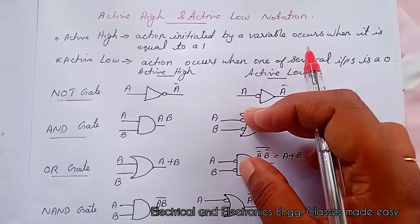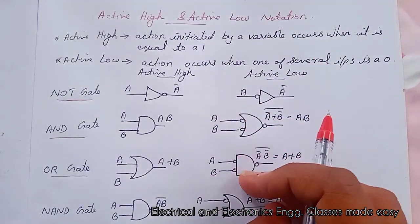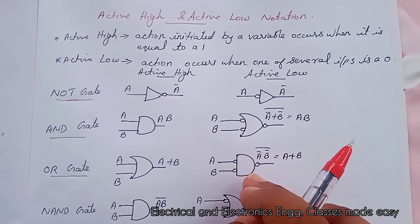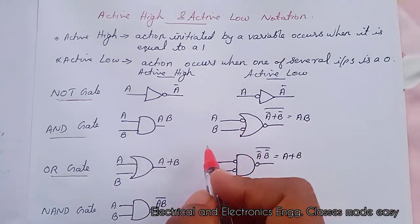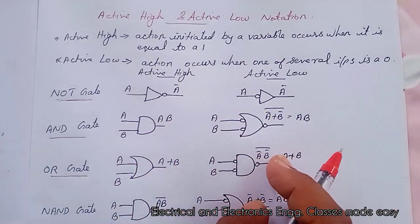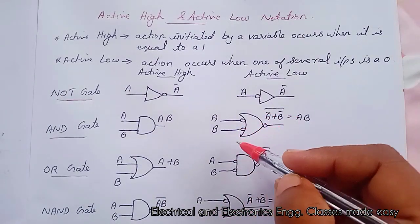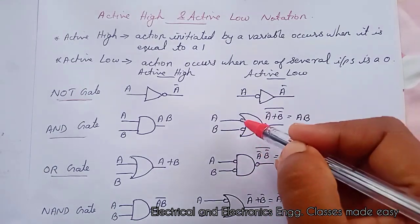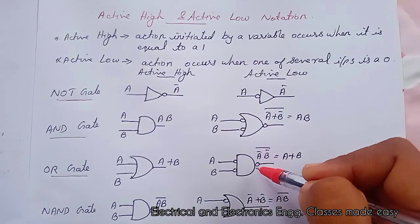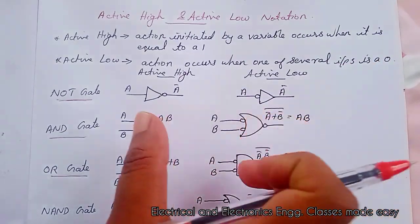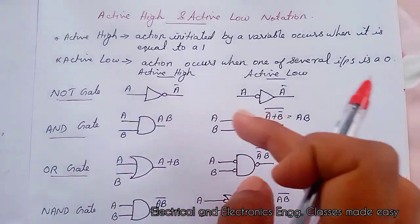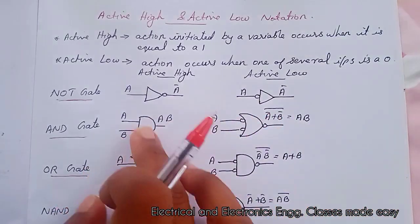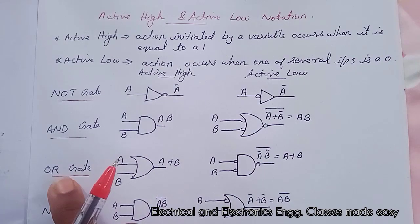Referring to both the AND gate and OR gate, the active low symbols can be obtained from active high symbols by inverting each of the inputs and outputs. By inverting each of the inputs and outputs and changing the gates. That is OR to AND and AND to OR. So, this is the case of AND gate and OR gate.